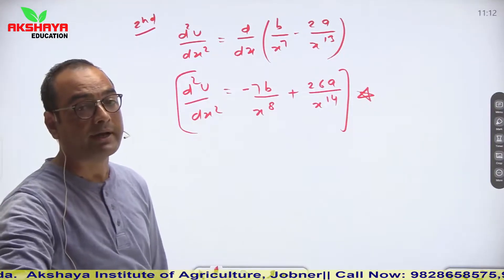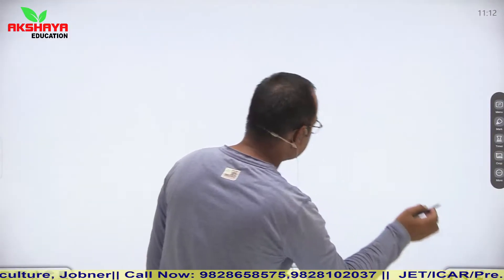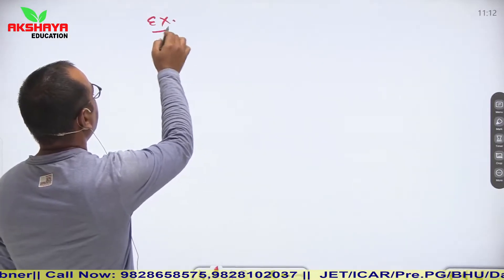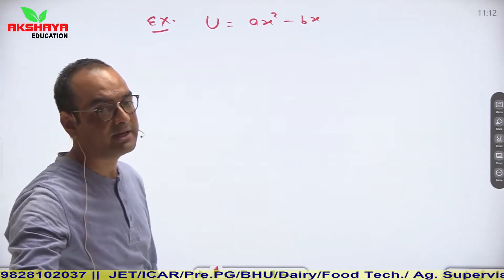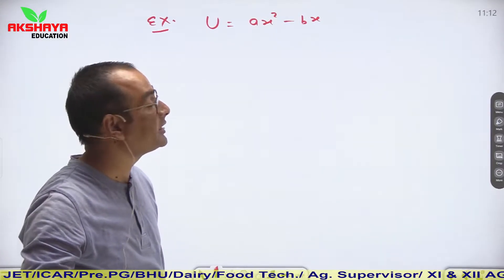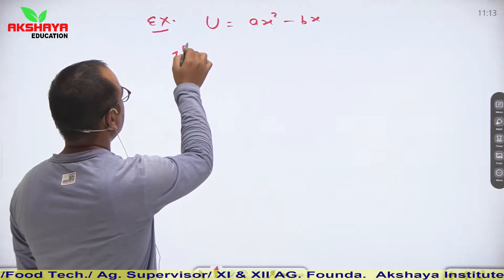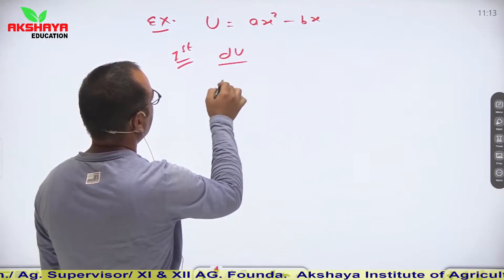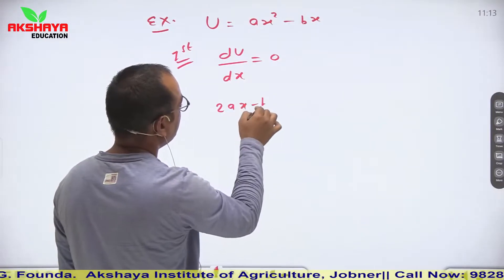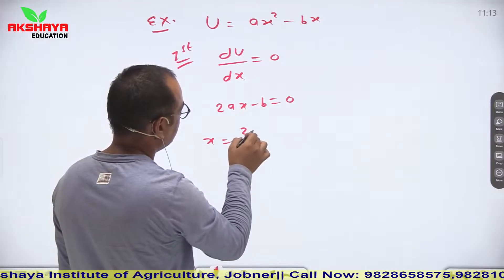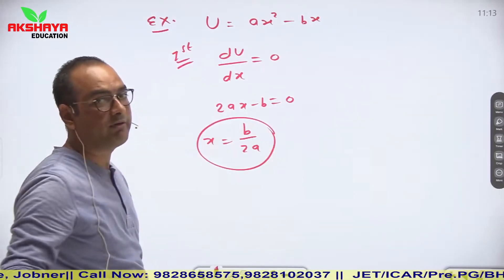This is the general pattern of question in your competitive section. You will get simpler questions, but I took this example to make concepts clear. Now a simpler example: given U = ax² - bx, find equilibrium condition. First, set dU/dx = 0: differentiating gives 2ax - b = 0, so x = b/(2a). This is the equilibrium position.